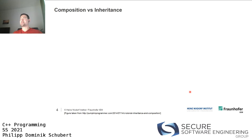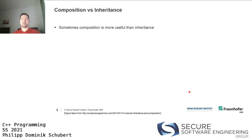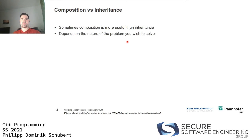One more thing to keep in mind: we talked about inheritance, which is one of the main points of OOP, but there is also a different concept called composition. Sometimes it makes sense to use composition rather than inheritance. It really depends on the nature of the problem you wish to solve. Sometimes inheritance might be better; in other cases composition might be better. It depends if you wish to use polymorphism — I really can't tell you, unfortunately.